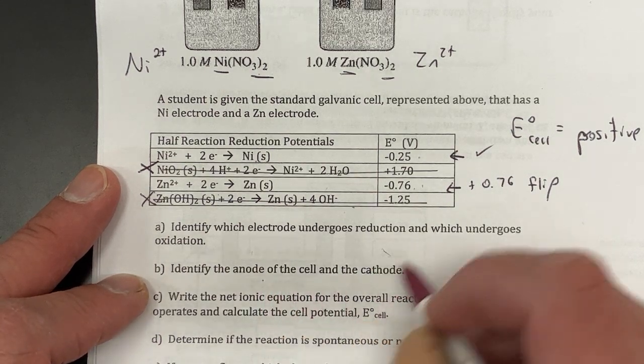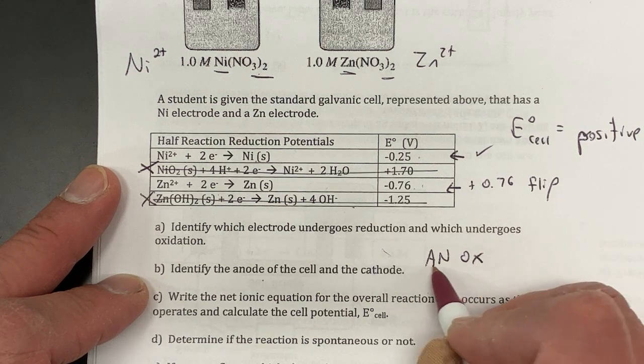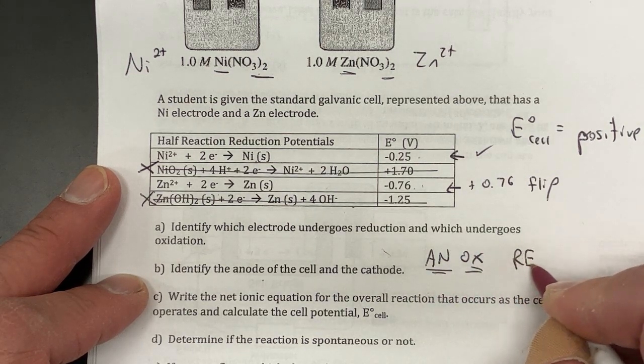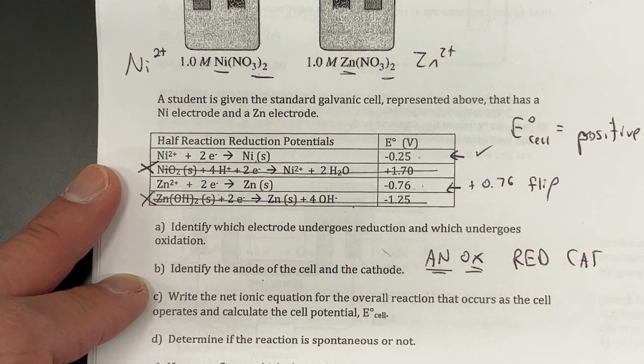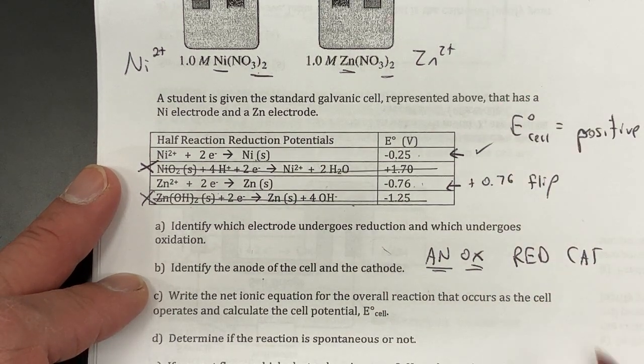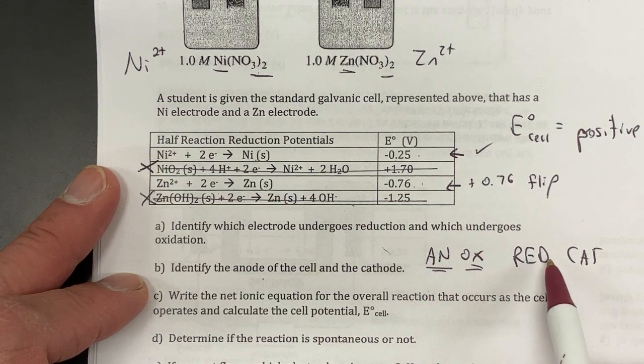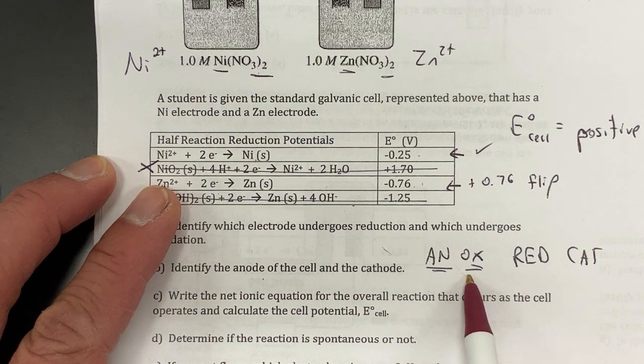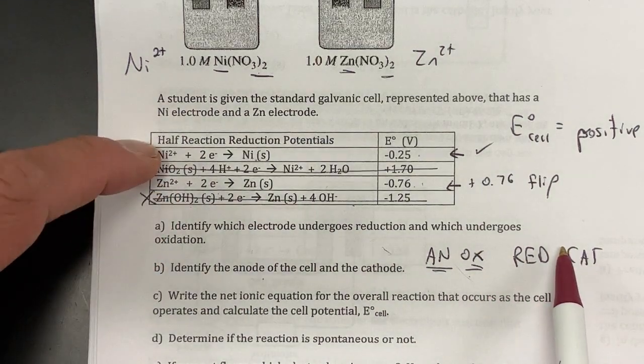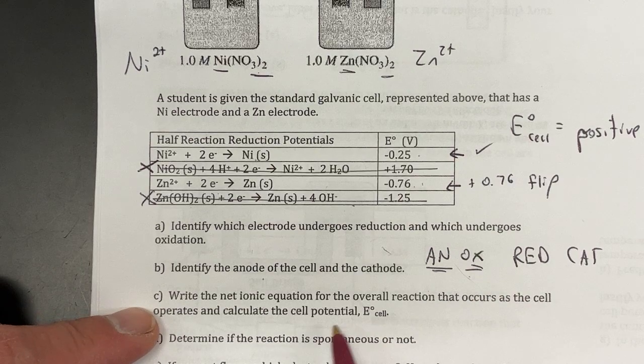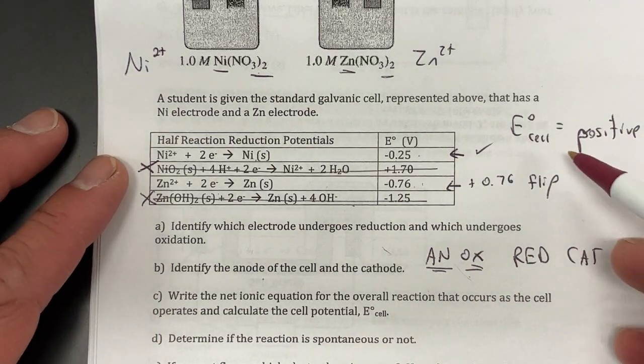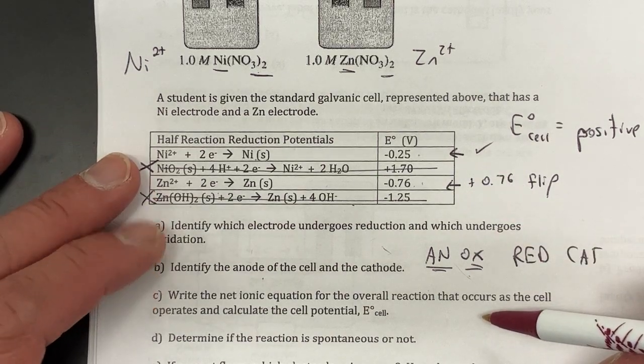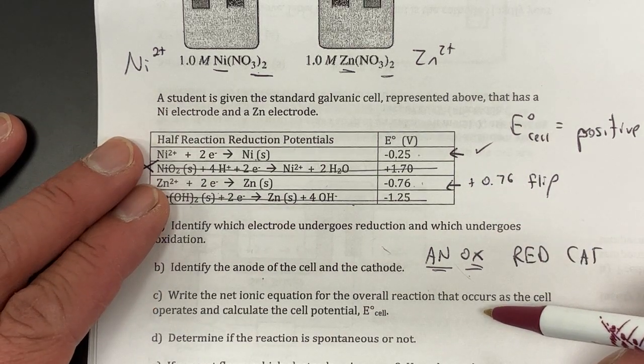Hopefully you can do that—remember AnOx, anode oxidation happens, and then RedCat, reduction cathode happens. So we have ox redcat, and this is my oxidation so that's my anode, and this would be my cathode. Okay, so my net ionic equation. Go ahead and do that. Take these two equations, do what you need to do, and figure out what the overall E cell is. You can pause now and try that.